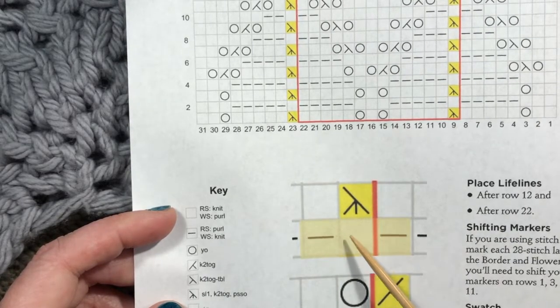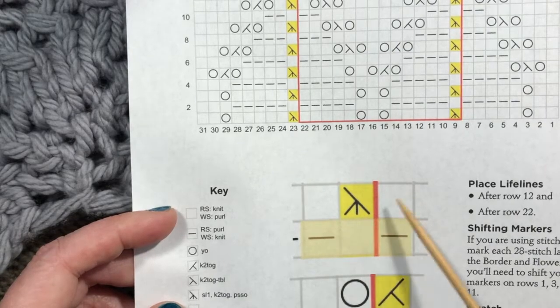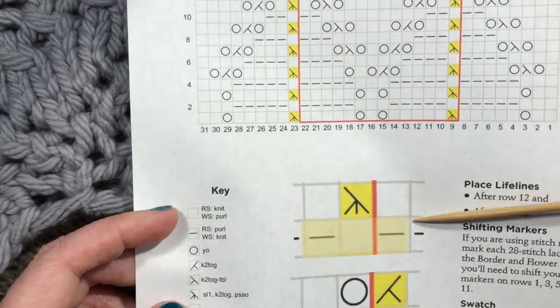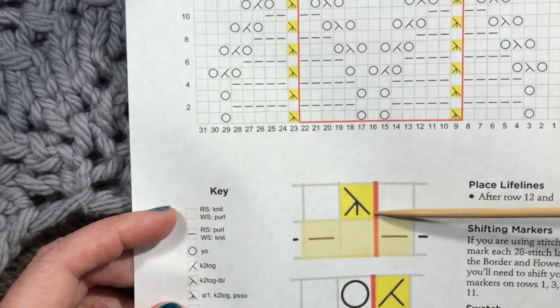Knit two together, pass the slip stitch over. But we want that marker to be here when we're done so that the decrease is on the left side of the marker.